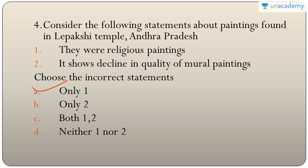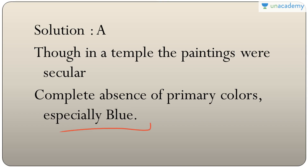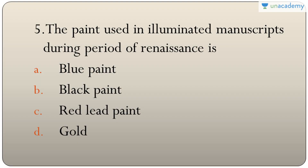Question five: the painting used in illuminated manuscripts during the Renaissance period is C — red lead paint, found in miniature paintings.